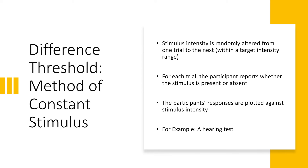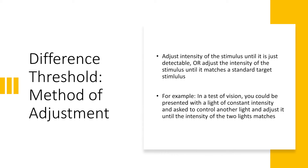We have different methods to assess thresholds. In the method of constant stimuli, the levels of a certain property of the stimulus are not related from one trial to the next, but presented randomly. This prevents the subject from being able to predict the level of the next stimulus and therefore reduces errors of habituation and expectation. For absolute thresholds, the subject reports whether he or she is able to detect the stimulus. For difference thresholds, there has to be a constant comparison stimulus with which each of the varied trials are compared. The method of adjustment asks the subject to control the level of the stimulus, instructing them to alter it until it is just barely detectable against background noise, or is the same as the level of another stimulus. This is repeated many times and is also referred to as the method of average error.